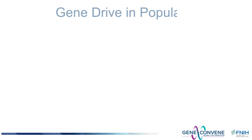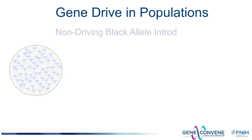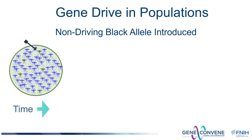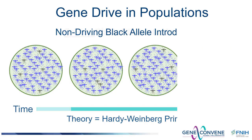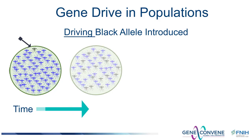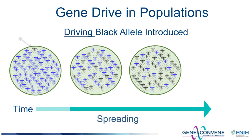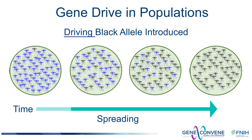Transmission advantage of an allele can have interesting consequences in populations. If one were to introduce insects with a non-driving allele into a population, population genetic theory tells us we would not expect the frequency of that allele to change over time. On the other hand, a driving allele is predicted to increase in frequency within that population — this is usually referred to as spreading. It is this property that makes gene drive technologies potentially useful. How rapidly the allele spreads will be a function of how strong the gene drive system is, as well as other factors.